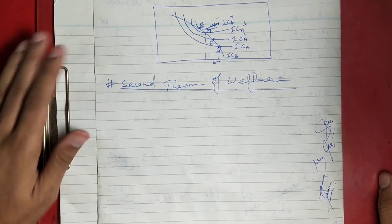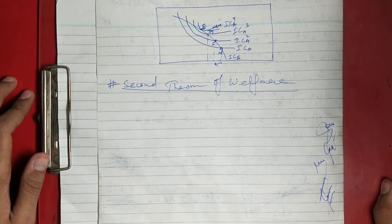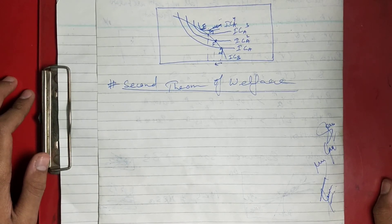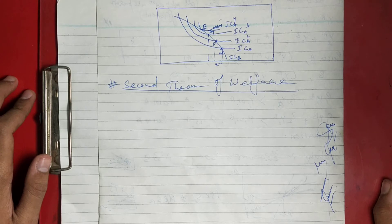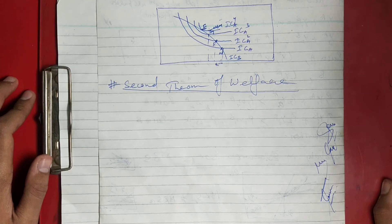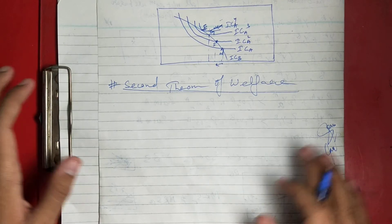According to the Second Theorem of Welfare, if all economic agents have convex preferences, then there will always be a set of prices p1 and p2 such that a Pareto efficient allocation is a market equilibrium for an appropriate assignment of endowment.